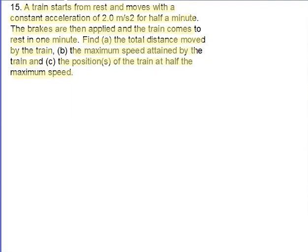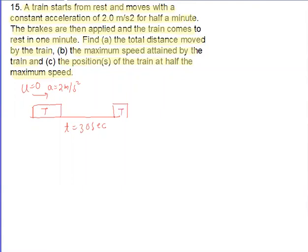Initially the train is at rest, so initial velocity is zero and acceleration is 2 meter per second square. The train moves for half a minute, meaning total time is 30 seconds. So final velocity V is equal to U plus AT — initial velocity is zero, acceleration is 2, time is 30 — that gives 60 meter per second.